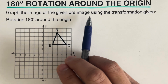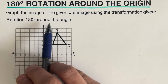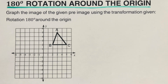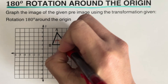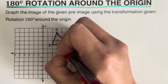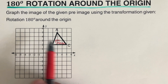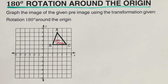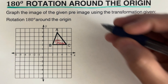In the first example, we are supposed to graph the image of the given pre-image using the given transformation — rotating 180 degrees around the point of origin. This figure on the graph is our pre-image, the original figure. We'll label it as the pre-image and draw the image after rotating 180 degrees around the origin. The first step is to write the coordinates of this pre-image.